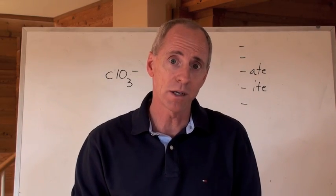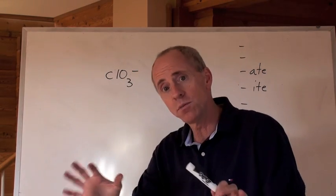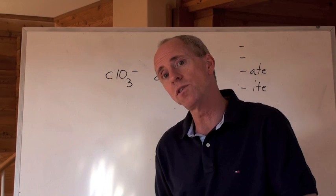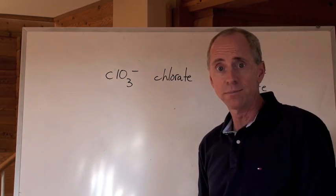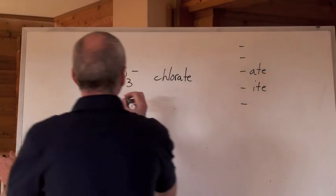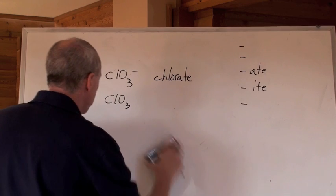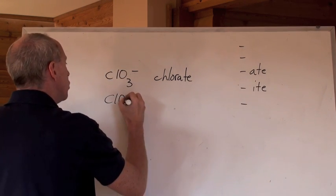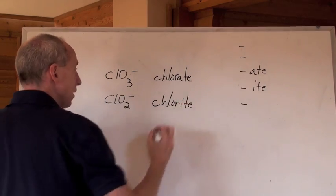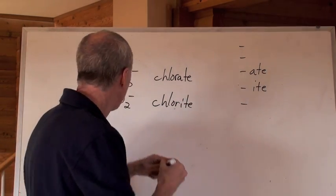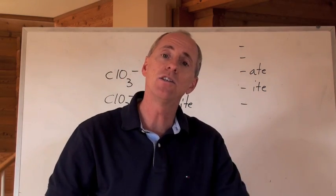Now, I want to show you that there are some polyatomic ions. You've probably noticed that on the chart, they're very similar to each other. They just have a slight twist in their name. For instance, ClO3 negative is called chlorate. Now, you may have noticed that right underneath it, on your polyatomic ion chart, there's a ClO2 with a negative one charge, and that's called chlorite. Hey, now you can figure it out. Same charge, but one less oxygen turns that ate into an ite.